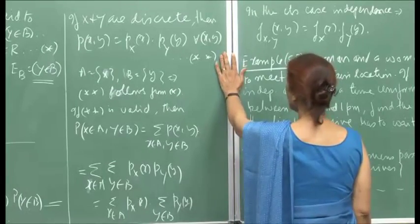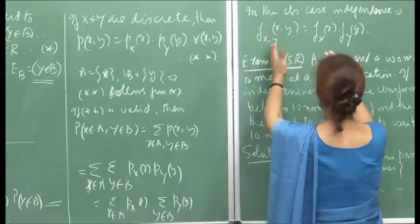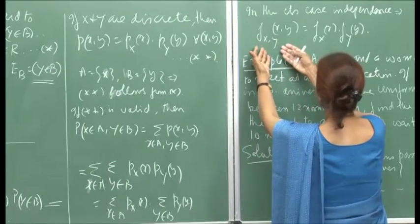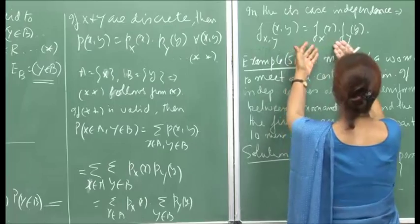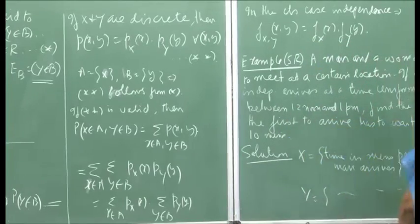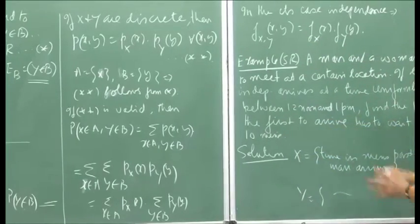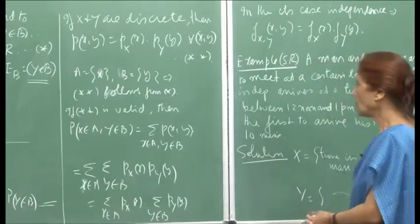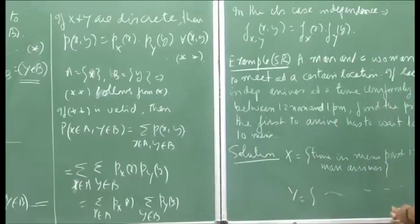For the continuous case, the equivalent condition is that the joint PDF can be written as the product of the individual PDFs. So there are many equivalent ways of expressing the same concept of independence.